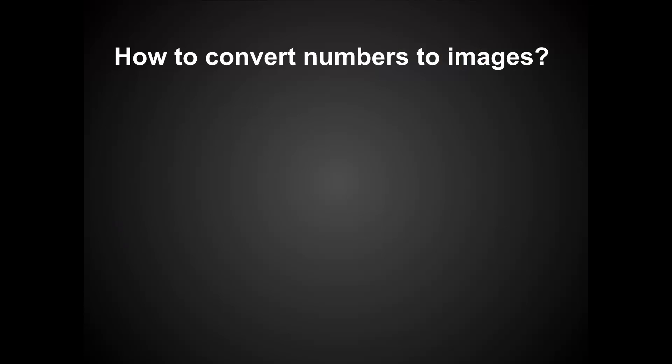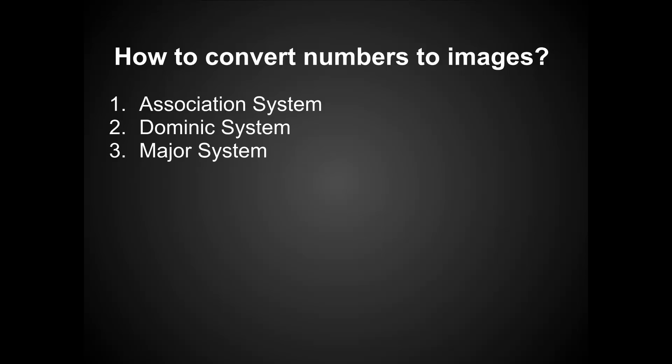So now we get to how do you convert those numbers into images. There are three methods I'll talk about. The first one is a simple association system. The second one is called the Dominic system. The third one is called the major system. There are also other systems like the Ben system, which is more complicated, and I'll save that for another screencast.